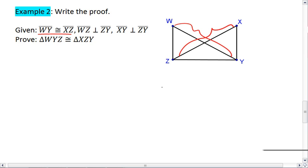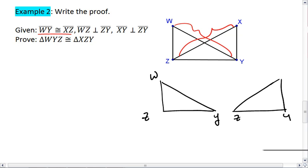Well, it's going to be easier for me if I rewrite these triangles separate from one another. With WZY and then ZYX. So I now can mark WY and XZ.